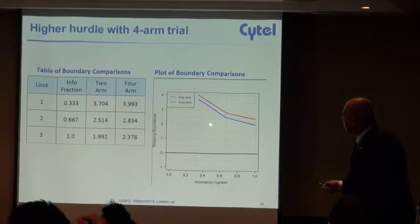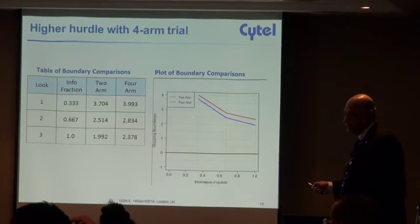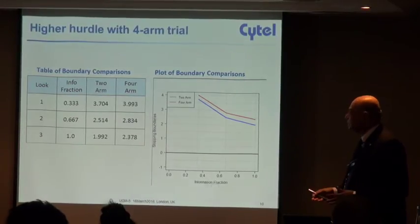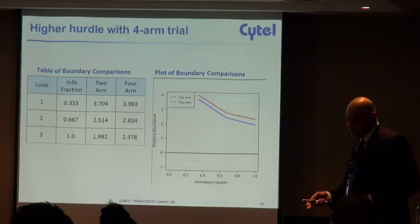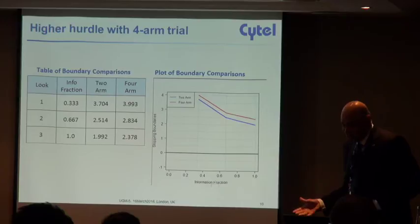You only have one chance to cross the blue boundary. So sometimes the sample size might be greater for the two arm, sometimes the sample size might be greater for the four arm depending on the alternate hypothesis.